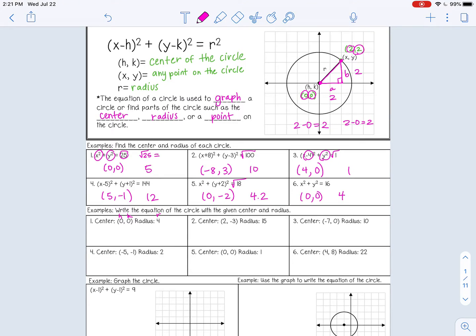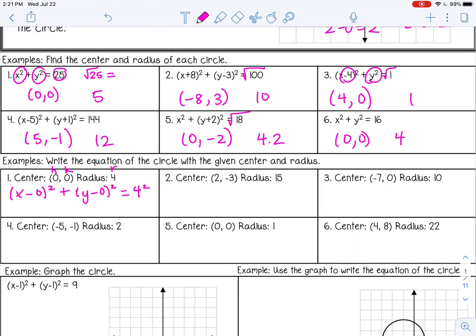All right, so x minus h, so x minus 0, and then plus y minus k, so y minus 0, and notice there's squared on the outside of the parentheses, equals r squared, so 4 squared. Now you want to simplify here. So remember, I said x minus 0 squared. If you subtract 0 from x, it's still just x. So we can write this as just x squared. Same thing for y minus 0 squared. That's simply y squared. And then 4 squared is 16.